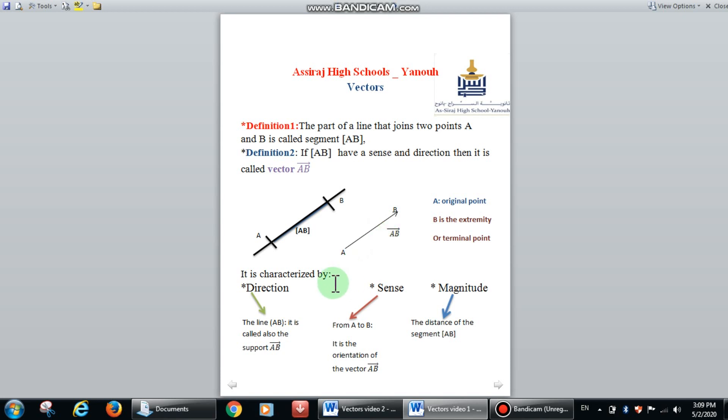Vector AB is characterized by its direction, its sense, its magnitude. Its direction is the line AB. It is a part of line AB, so it takes the direction of line AB.